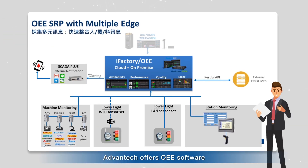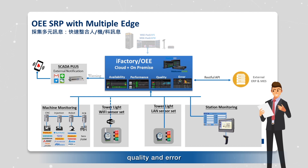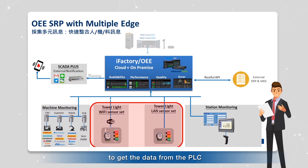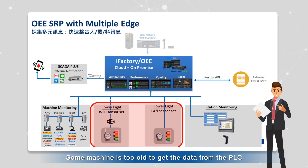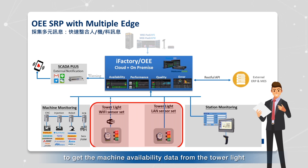Advantech offers OEE software and also offers an entire data acquisition edge to collect data for OEE availability, performance, quality, and error reporting. For availability, Advantech provides a WebAccess PLC driver to get data from the PLC. For older machines where it's not possible to gather data from the PLC, Advantech provides a detachable tower light sensor to gather machine availability data from the tower light.